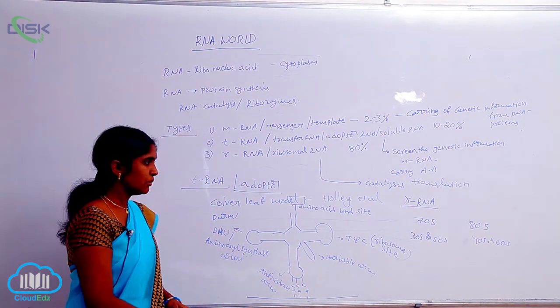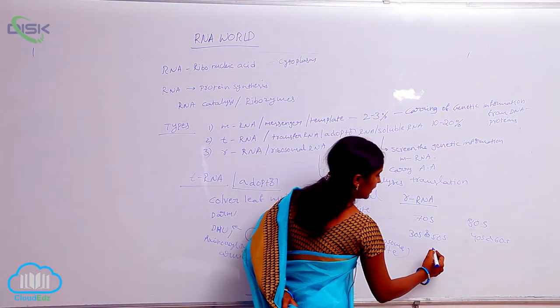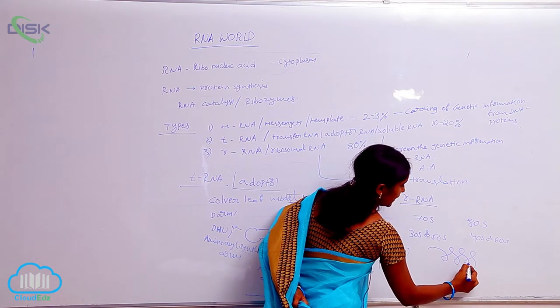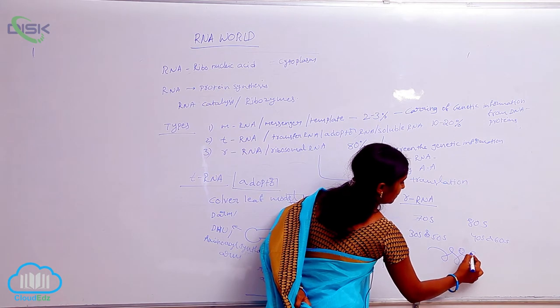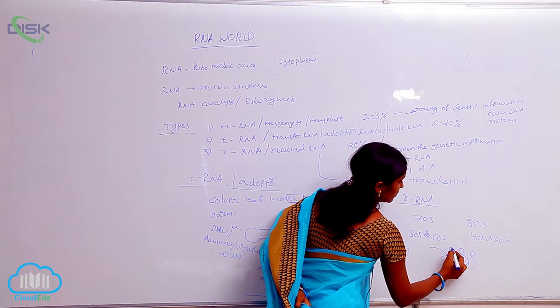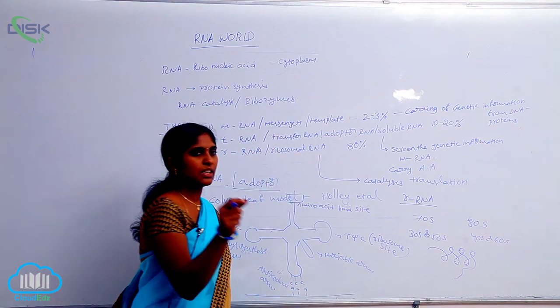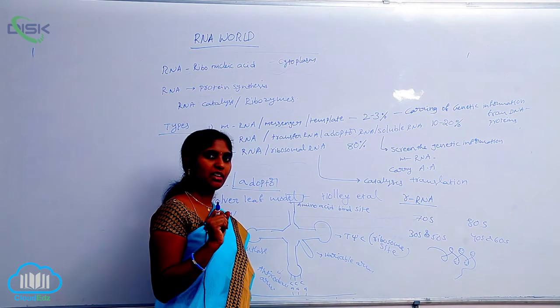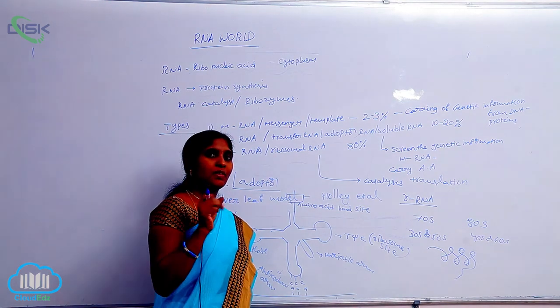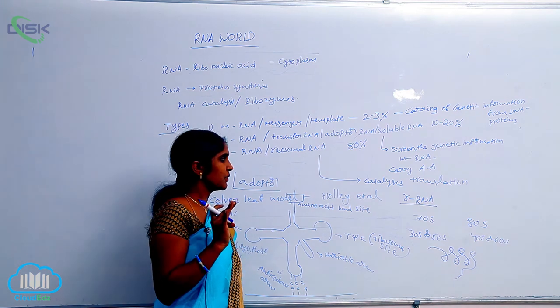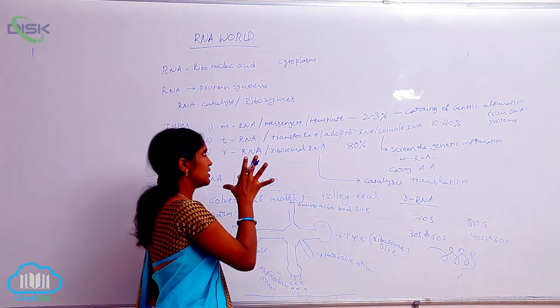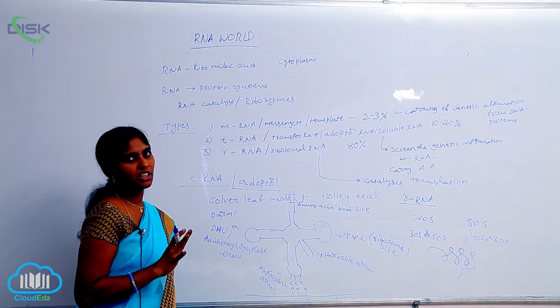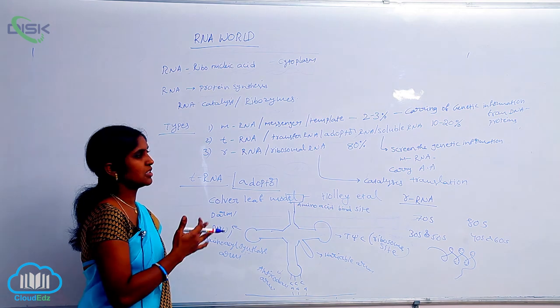But sometimes when they are in linear form, they are coiled. Coiled means pairing has happened. When pairing happens, they become inactive. Unpaired segments of rRNA are only active. Paired segments of rRNA are inactive. This rRNA is involved in translation. These are the three types of RNAs: mRNA, tRNA, and rRNA. How they are involved in protein synthesis, we continue. Thank you.